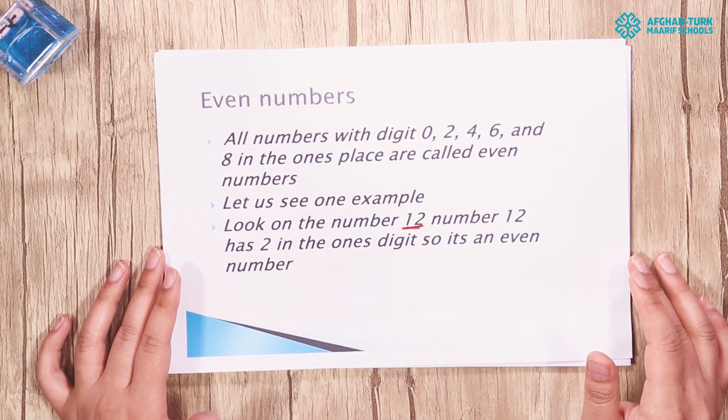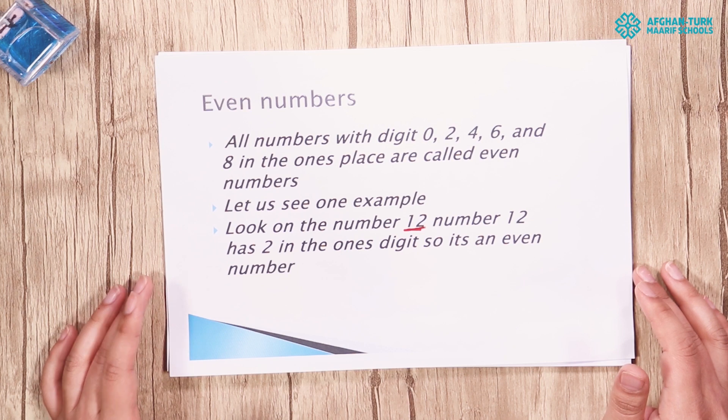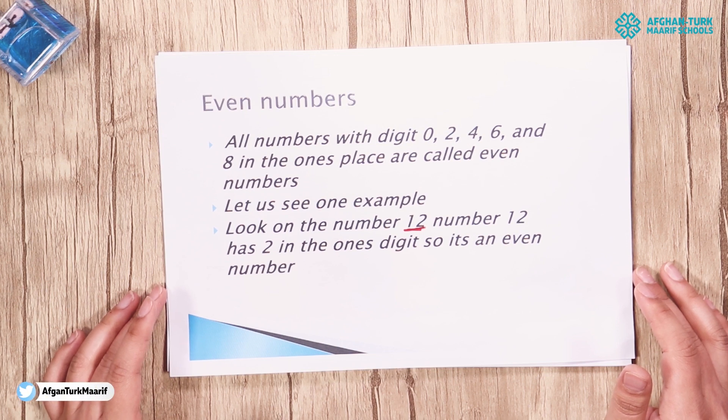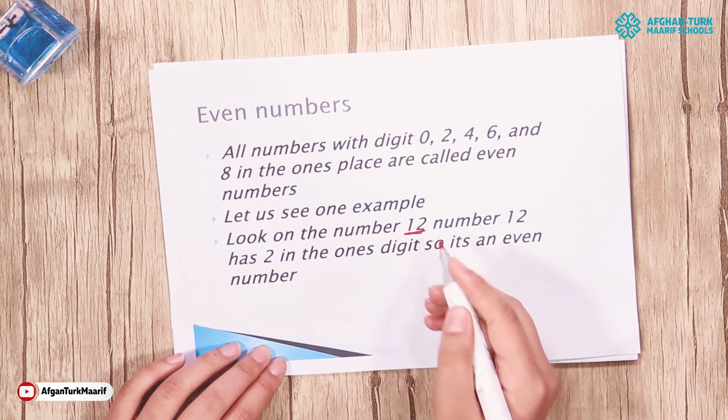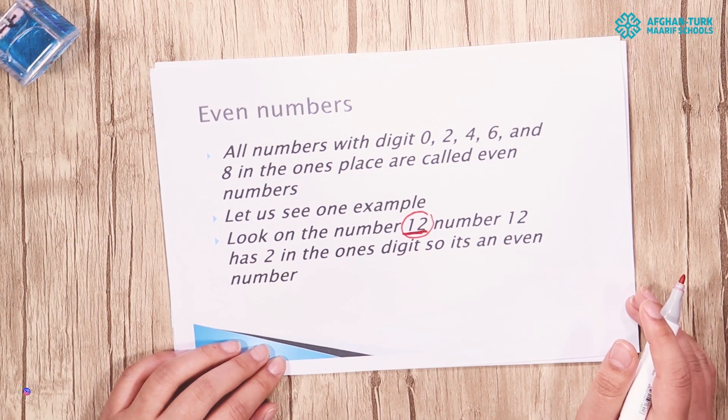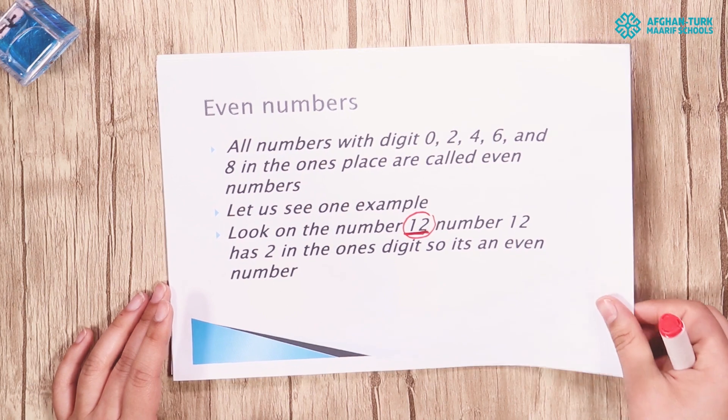First we have to start from even numbers. All numbers with digits 0, 2, 4, 6 and 8 in the ones place are called even numbers. Let us see one example. Look at the number 12. Number 12 has 2 in ones digit so it's an even number.